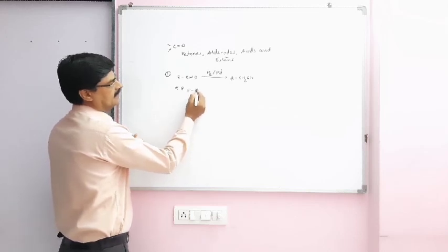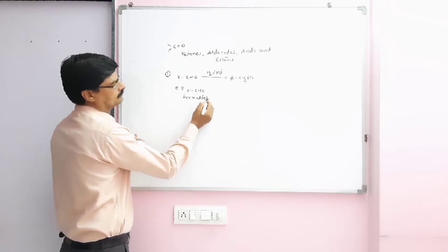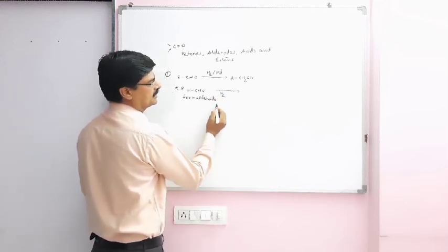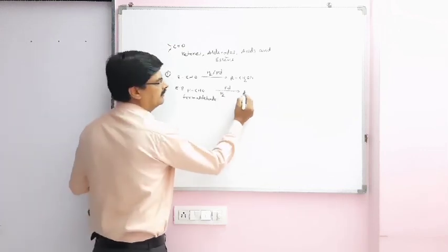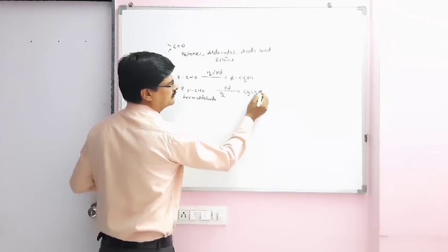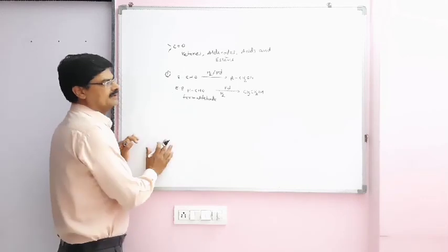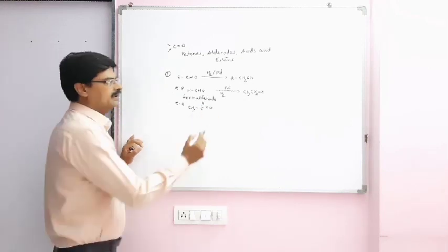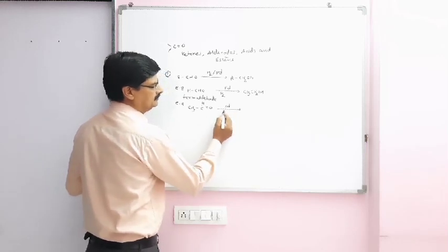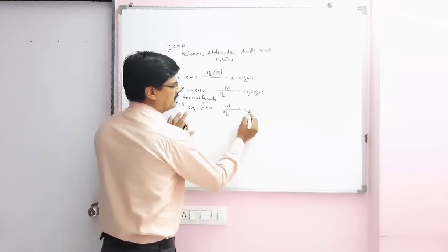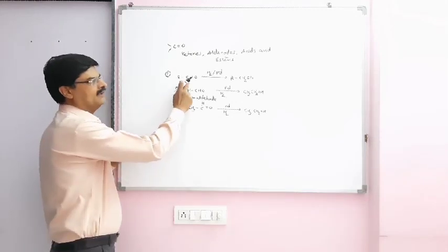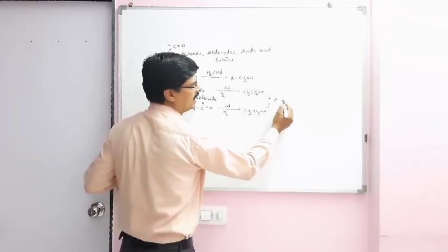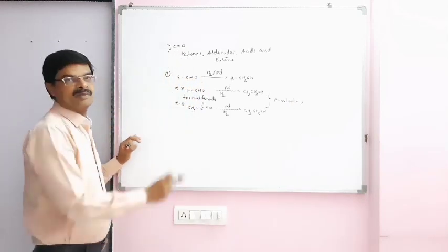For example, HCHO (formaldehyde) when reduced with hydrogen in the presence of palladium or nickel catalyst, we get alcohol CH3CH2OH. Another example: CH3-CHO when reduced in the presence of palladium catalyst with hydrogen, we get CH3CH2OH. Remember, with aldehyde we can prepare primary alcohol.